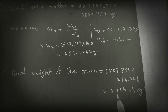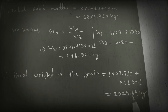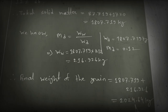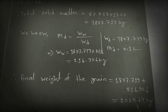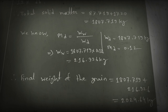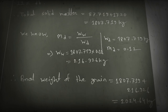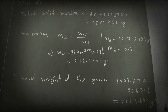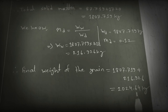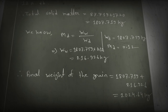The final weight of the grain is WW plus WD equals 1807.719 plus 216.926, which gives 2024.64 kg. This is the final weight of the grain after mixing the 100 kg and 2000 kg of wheat. This is the answer to the first problem. Now we are going to solve another math problem.